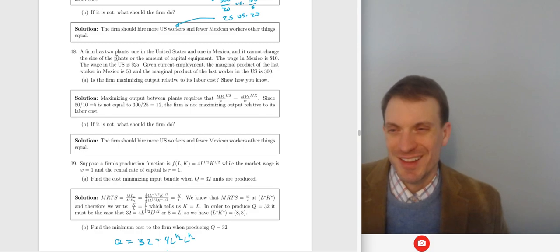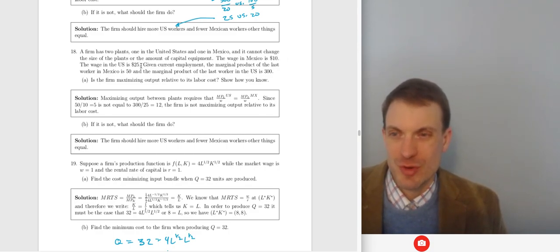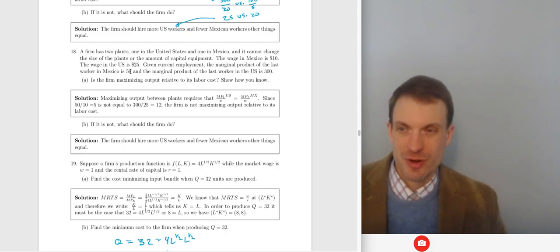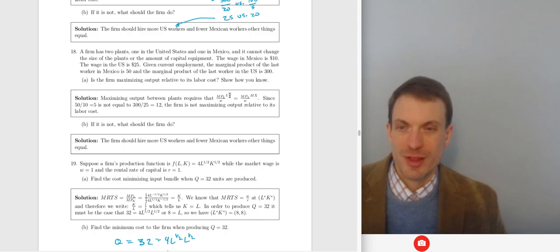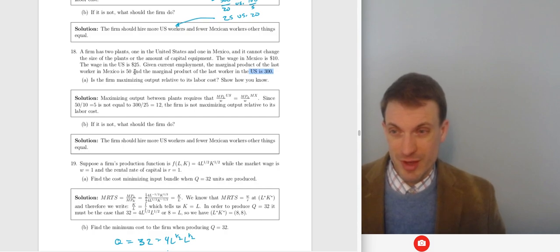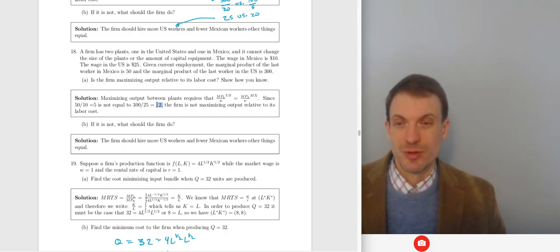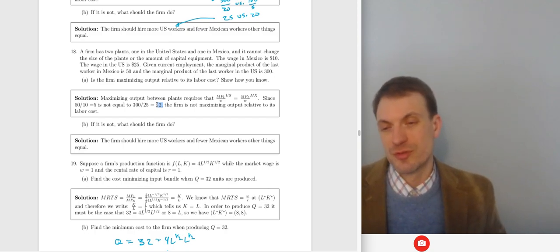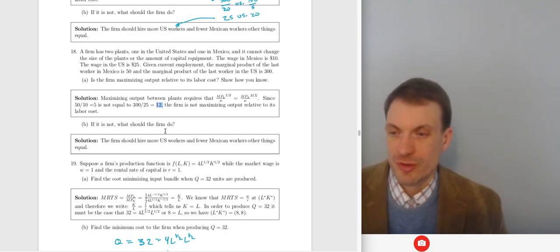Similar problem: wage in Mexico is $10, wage in the US is $25. Marginal product of the last worker in Mexico is 50, in the US is 300. Comparing MPL/w: Mexico gives 50/10 = 5, US gives 300/25 = 12. The marginal product per dollar of wage is higher in the US, so the firm should hire more US workers and fewer Mexican workers, other things equal.